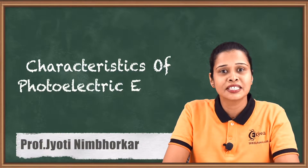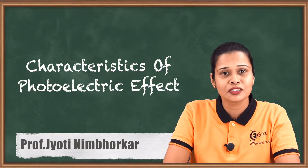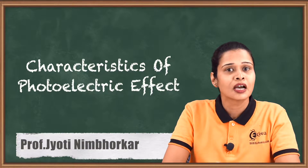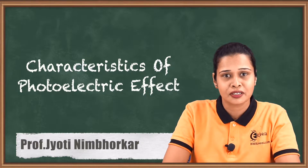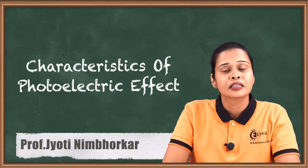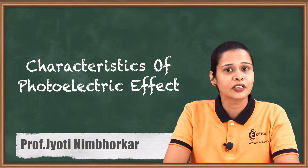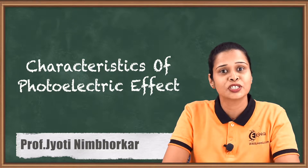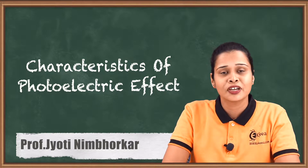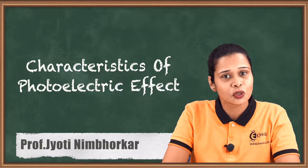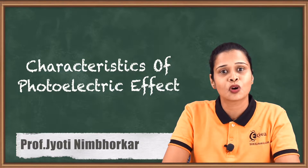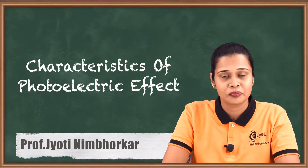Hello friends, today we will see characteristics of photoelectric effect. We know what the photoelectric effect is: when light of suitable frequency is incident on a metal surface, there is an emission of electrons. This effect is called the photoelectric effect and the emitted electrons are called photoelectrons.